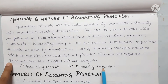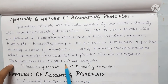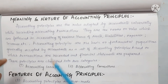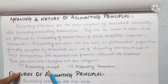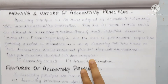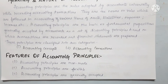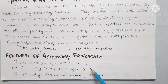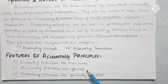These principles are classified into two categories: accounting concepts and accounting conventions. Accounting principles are further divided into accounting concepts and accounting conventions. Accounting principles are manmade.